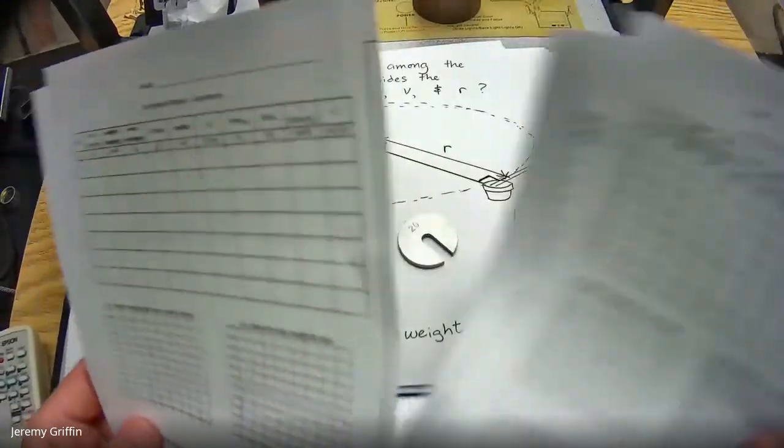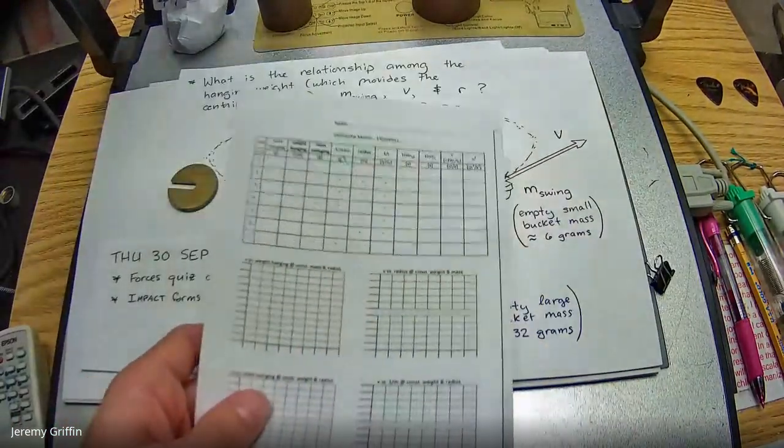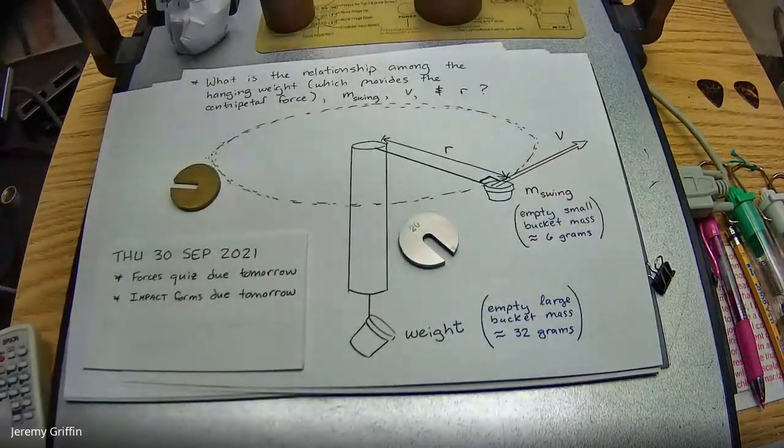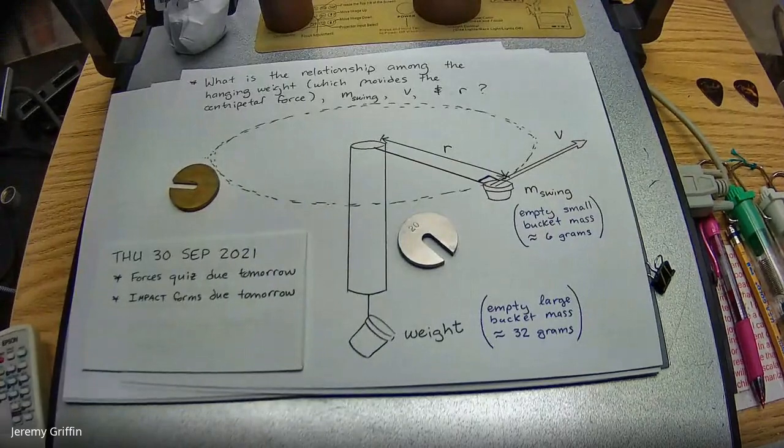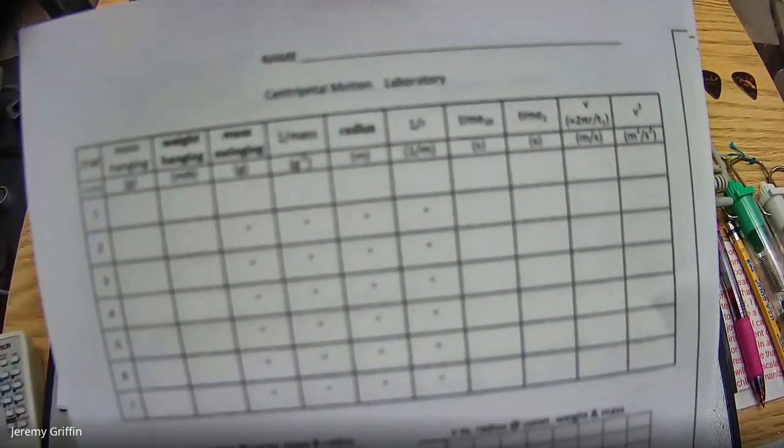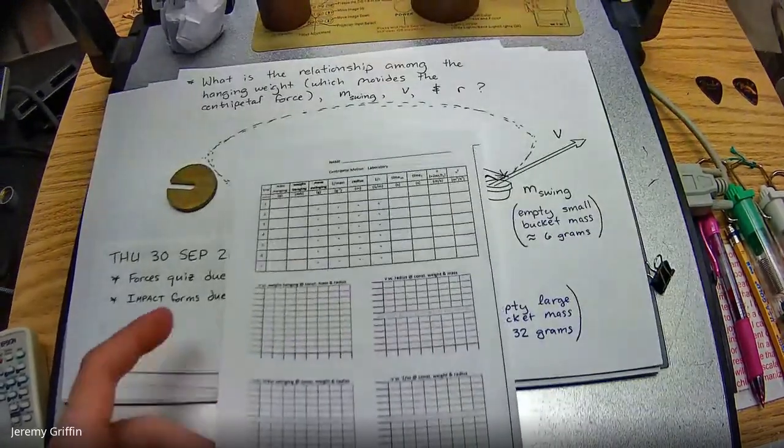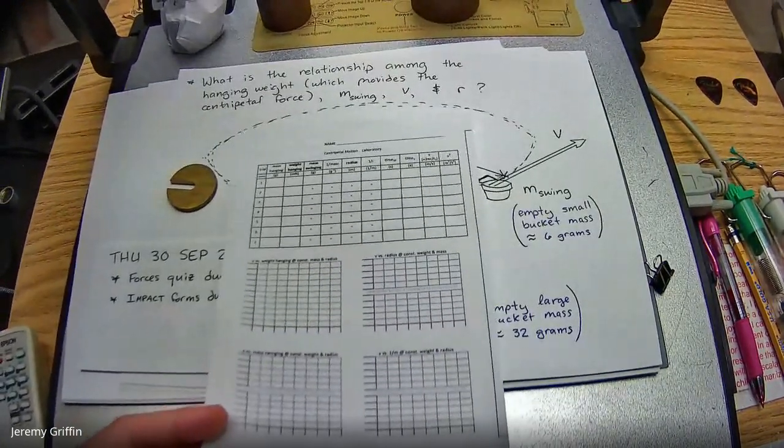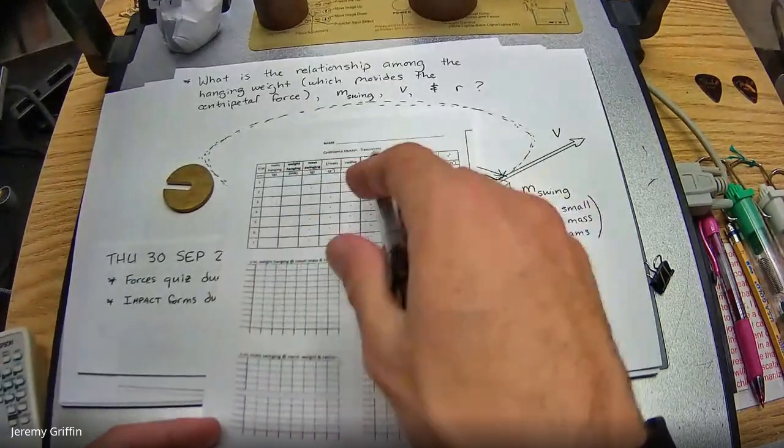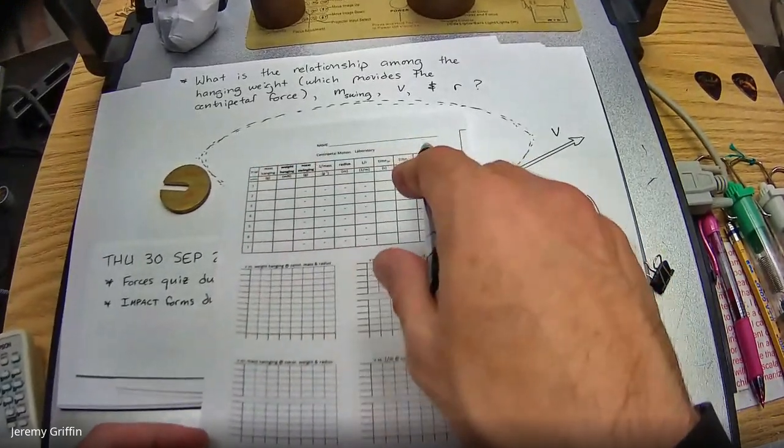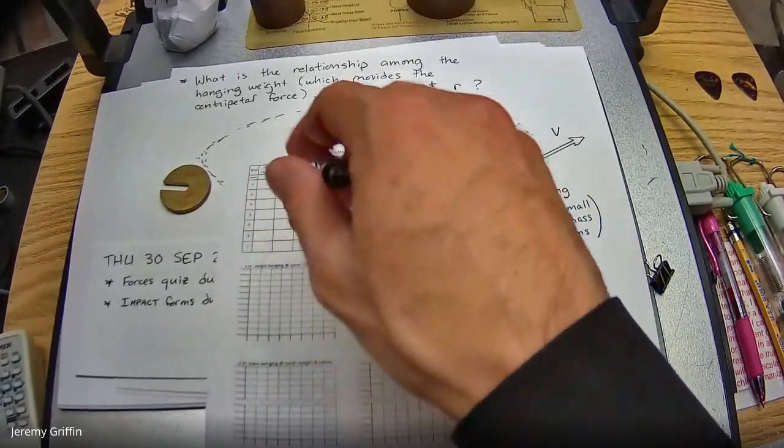So one lab page looks like this. If you are at home watching this video, let me hold this kind of close to the camera, maybe get a screenshot or take a look at that. All the tables have the same columns, just different hash marks.